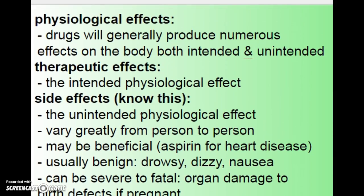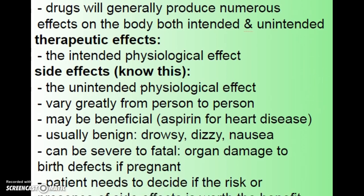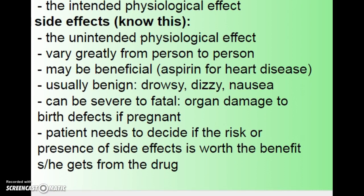Regarding physiological effects: the therapeutic effect is any intended beneficial effect produced on the body. A drug can have both intended and unintended therapeutic effects — sometimes a drug developed for one use is found to have positive uses for something else. Side effects are unintended effects and can vary greatly from person to person. Common ones include dizziness, drowsiness, and nausea, but they can be severe to fatal, including organ damage or birth defects. As a patient, you need to decide whether the risk of side effects is worth the treatment.